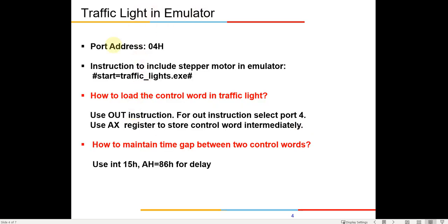The program works like this: the port address will be four. First you use the syntax to fetch the emulator program — 'start traffic_lights.exe' — so it includes that traffic light program. Then you use the OUT instruction to give the required lights to be switched on and off based on the control word.